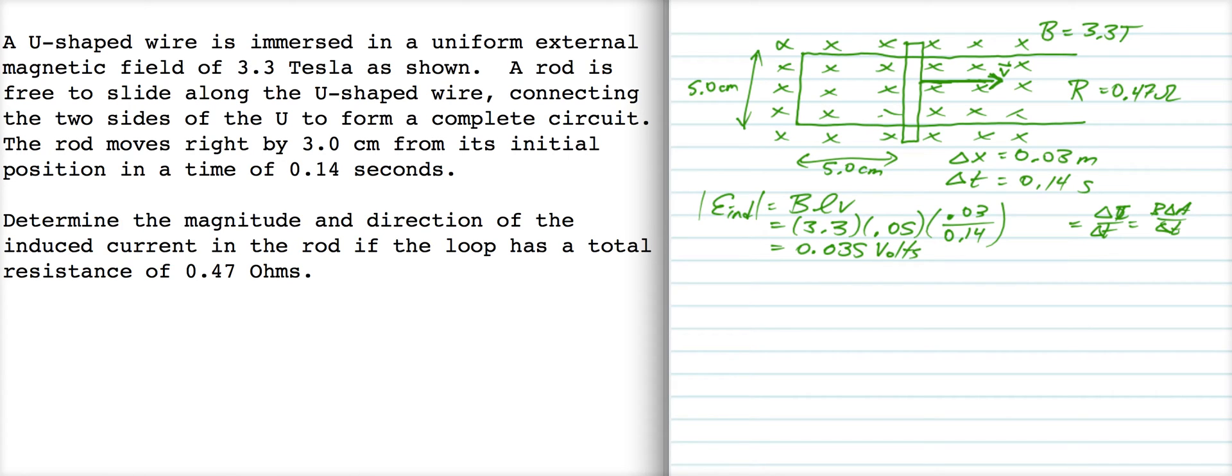So the induced current, the magnitude at least, is equal to the magnitude of the induced EMF divided by the resistance, so that's 0.075 amps. So there's that part, how about the direction?